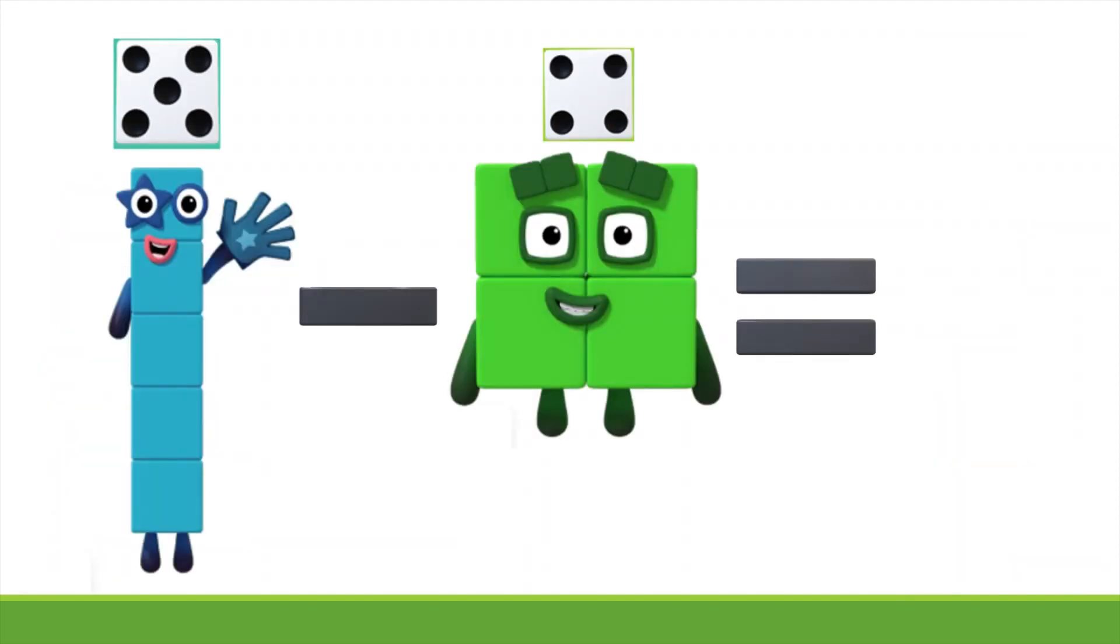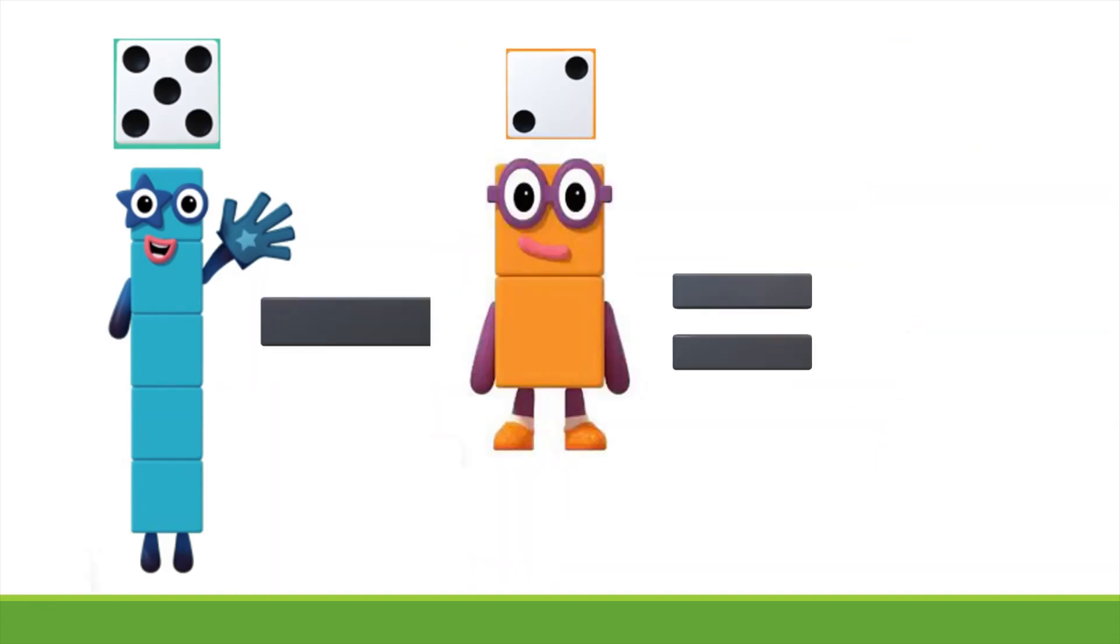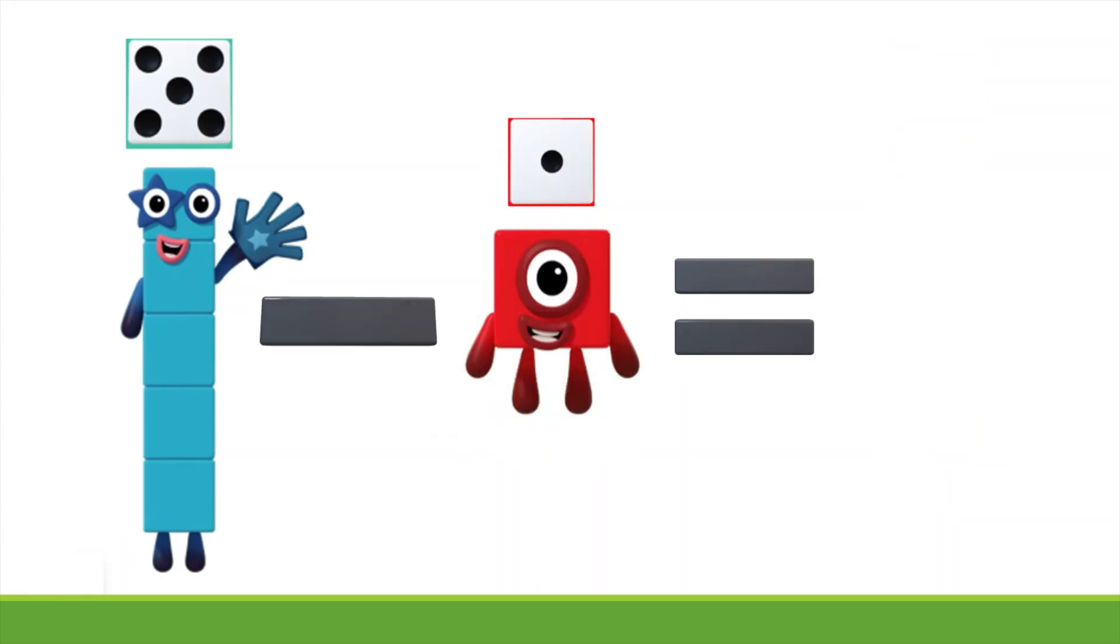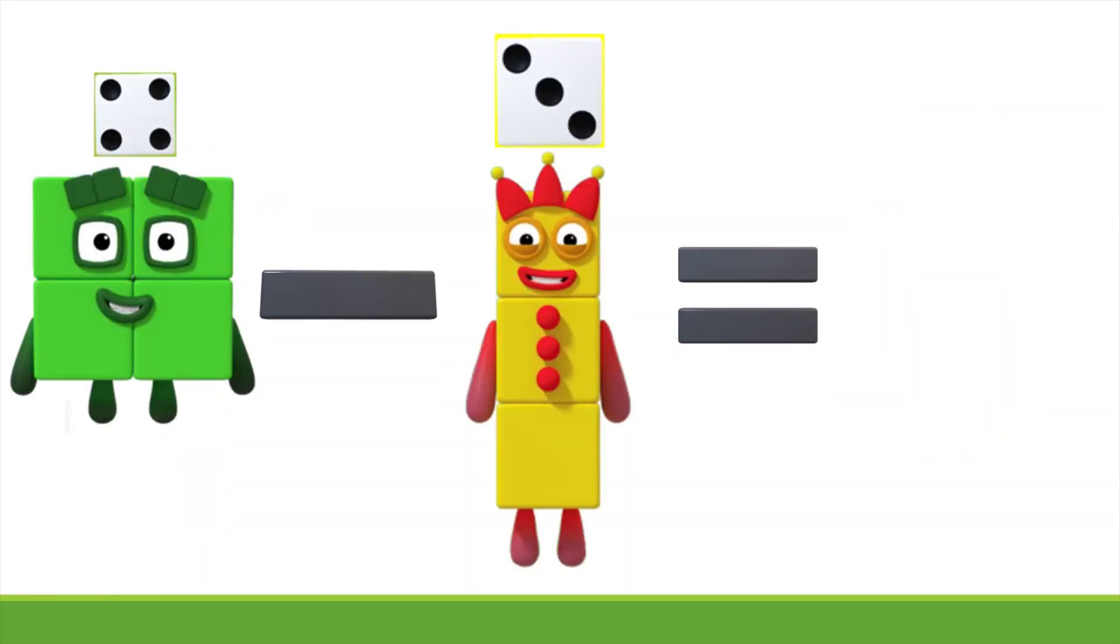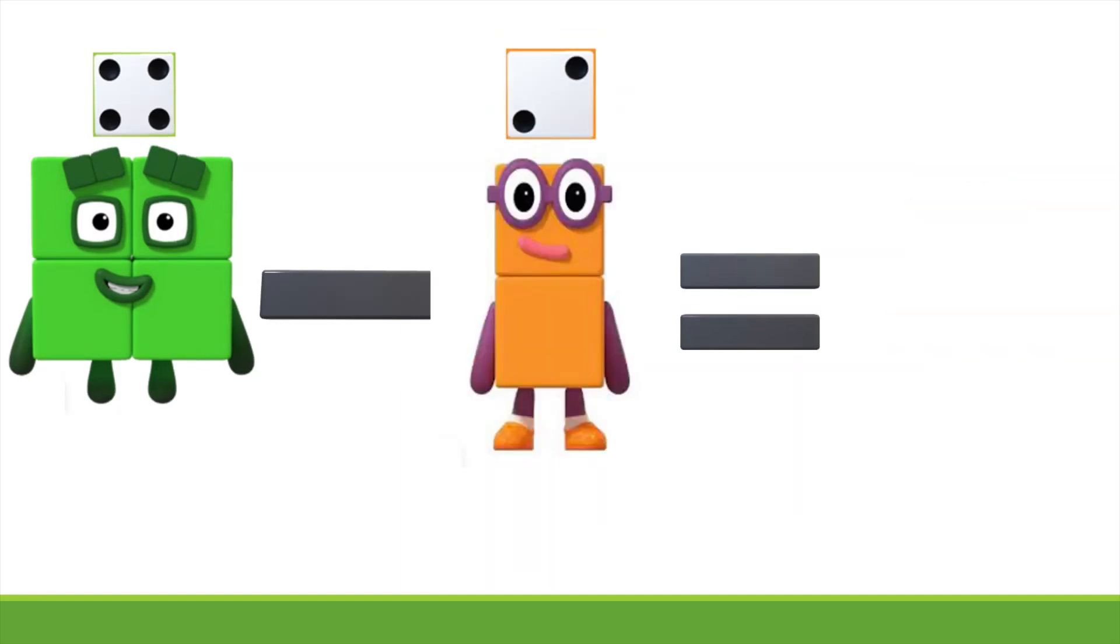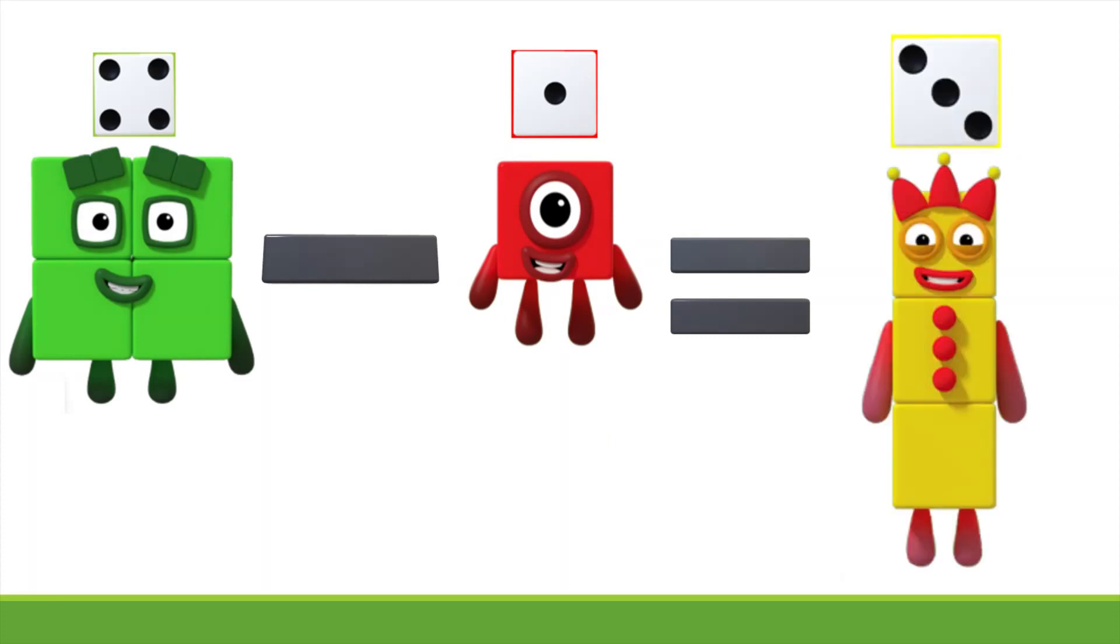5 minus 4 equals 1. 5 minus 3 equals 2. 5 minus 2 equals 3, 5 minus 2 equals 4. 4 minus 3 equals 1. 4 minus 2 equals 2. 4 minus 1 equals 3.